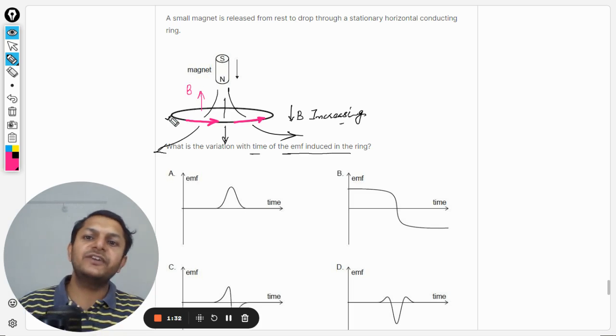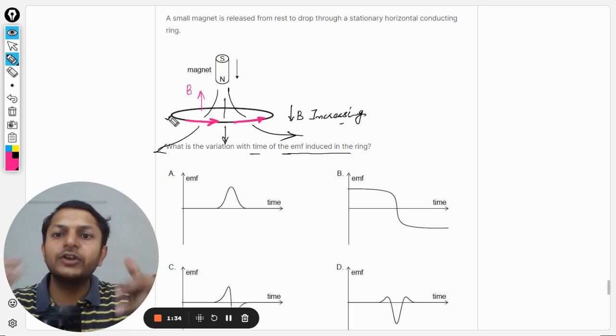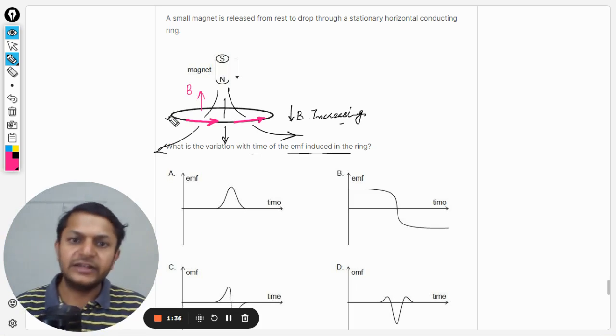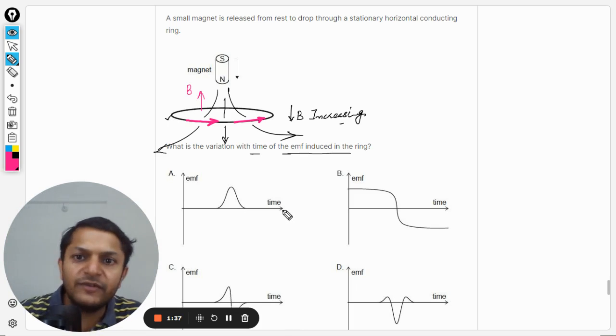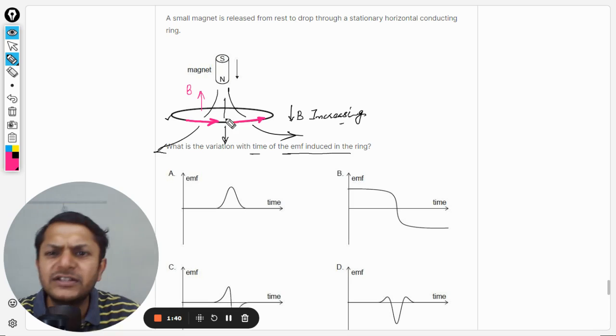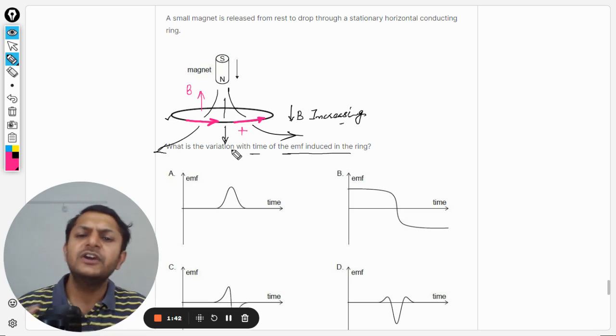So this magnetic field written in pink letters, it is going to oppose the magnetic field earlier. Now so EMF is induced, no doubt about that, and we can just assume one direction to be positive, so we take this direction to be positive.